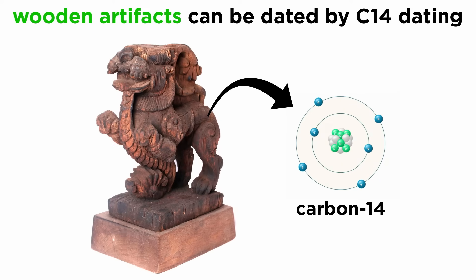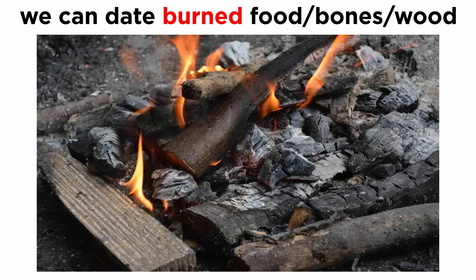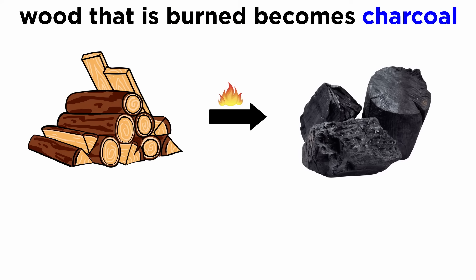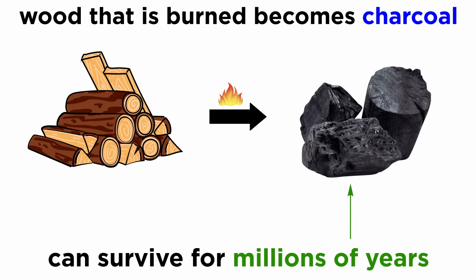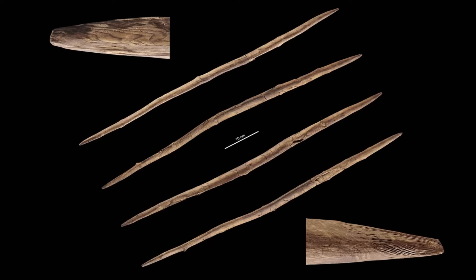However, there are ways for carbon to be retained by an artifact for millennia. The most common way is burning. This can include burned food, animal bones, and most frequently, wood. Charcoal created by burning wood has been produced by humans for hundreds of thousands of years. Therefore, it is the most common artifact to be utilized by C-14 dating. These burned materials can survive millions of years, retaining the half-life cycle of the carbon that was created when the organism was born.